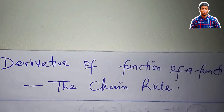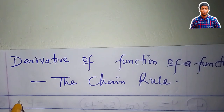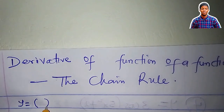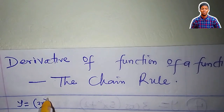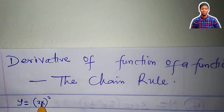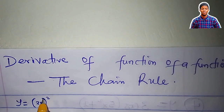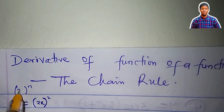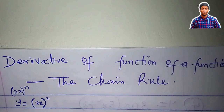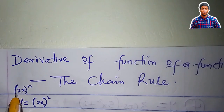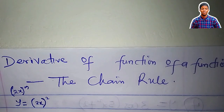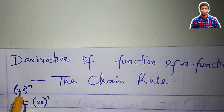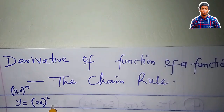Let's now talk about the derivative of a function of a function — that is, a function made up of another function. It is actually a composition. Look at this function: y is equal to 2x squared. 2x is a function; it is inside another function. So when I write a function inside another, it becomes a function of a function — the power function is carrying an inner function of 2x.